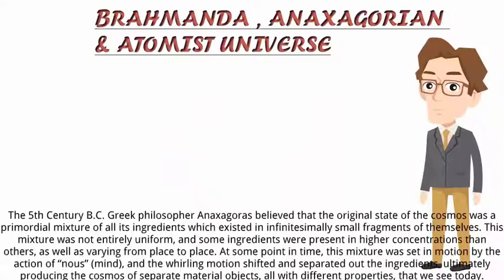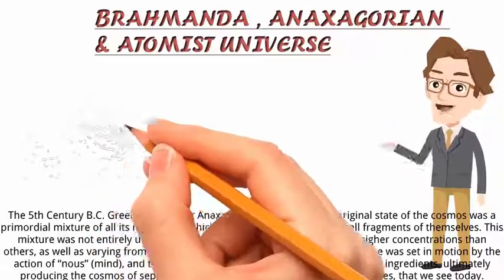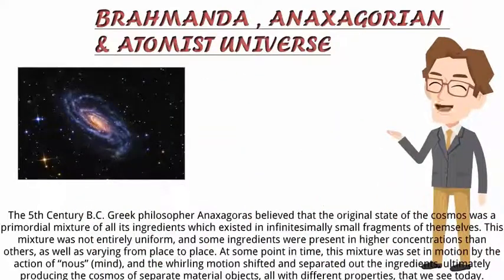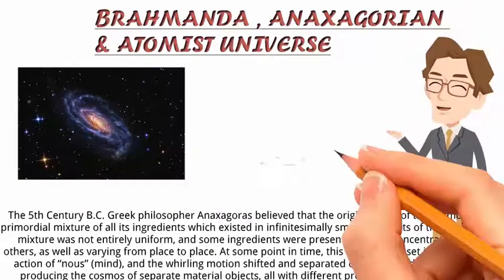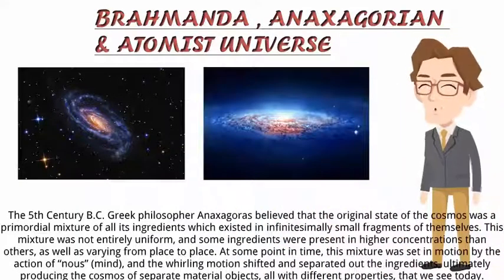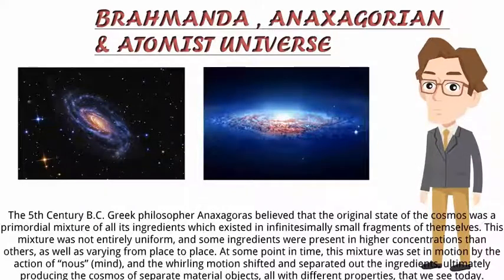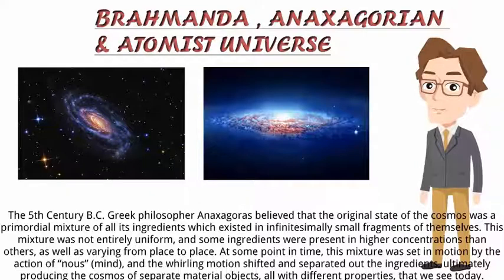The next theory is about an Anaxagorean universe. The 5th-century BC Greek philosopher Anaxagoras believed that the original state of the cosmos was a primordial mixture of all its ingredients, which existed in infinitesimally small fragments of themselves. This mixture was not entirely uniform, and some ingredients were present in higher concentrations than others, varying from place to place.